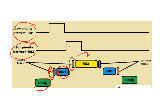After IRQ2 starts execution and completes, our processor performs unstacking — meaning it jumps from IRQ2 back to IRQ1, because it had resumed the process at IRQ1. After completing IRQ1, it will go back to the main program and continue execution. This is how the processor executes and services the interrupts.